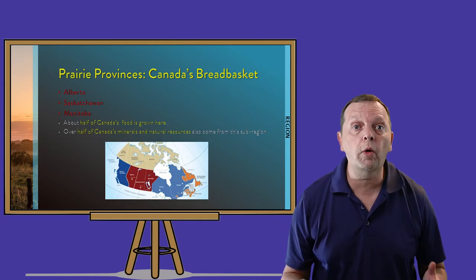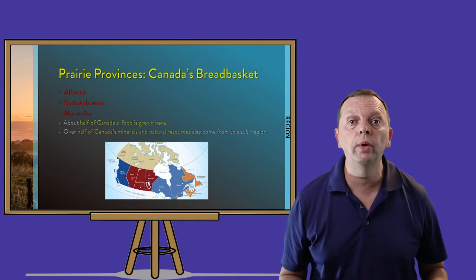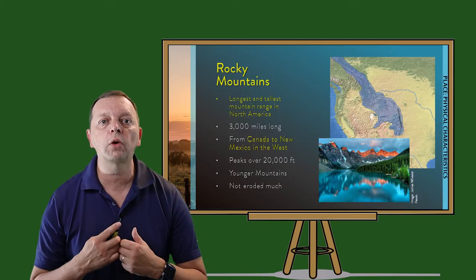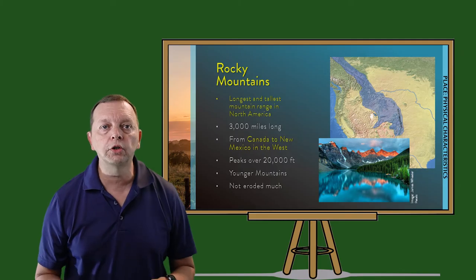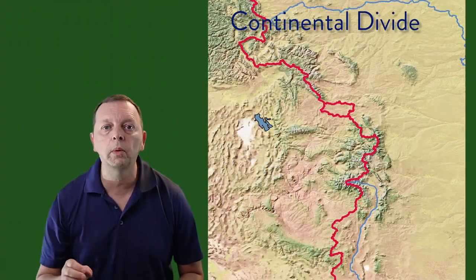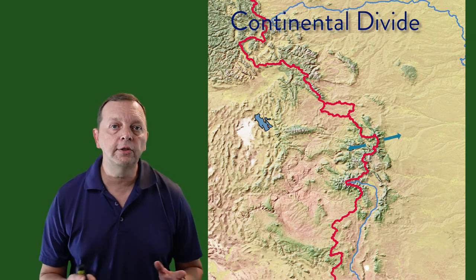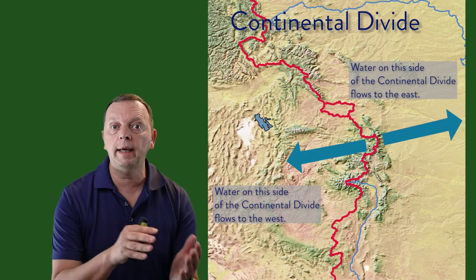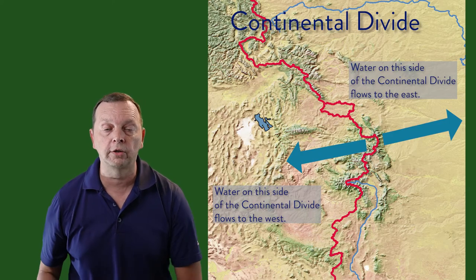These provinces also provide Canada with over half its minerals and natural resources, including a great deal of oil. West of the Great Plains, we find the majestic Rocky Mountains. These are far younger than the Appalachians and haven't been eroded as much. Therefore, the Rockies are not only the longest but the tallest mountain range in North America, with peaks as high as 20,000 feet. The Rockies stretch from New Mexico all the way up into Canada and Alaska, where we find North America's tallest peak, Mount Denali, towering at 20,310 feet. Along the crest of the Rockies is where we find the Continental Divide, which divides the watershed of the North American continent — rain falling west of this line flows into the Pacific Ocean, and rain falling east flows into the Gulf of Mexico or the Atlantic Ocean.